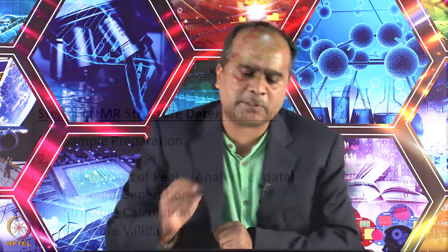Let us start today's lecture. What we want to do today is: given a primary sequence in terms of amino acids, can we read the amino acid sequence, use that information, record various sorts of NMR spectra, and translate those into a three-dimensional structure? That is the total goal.